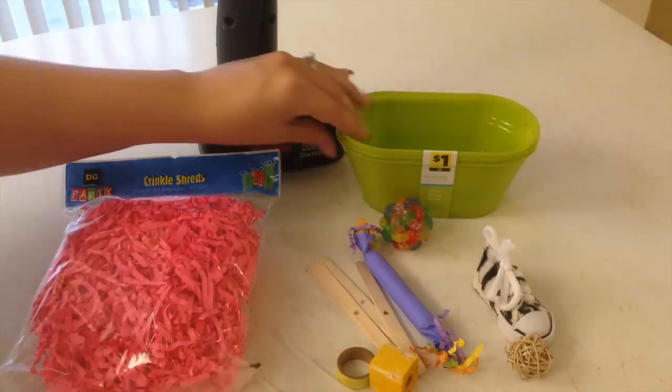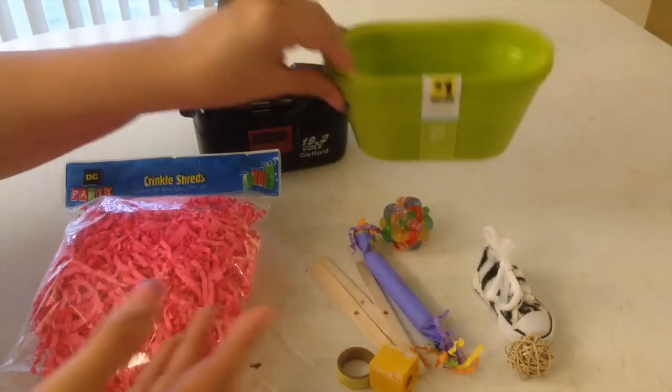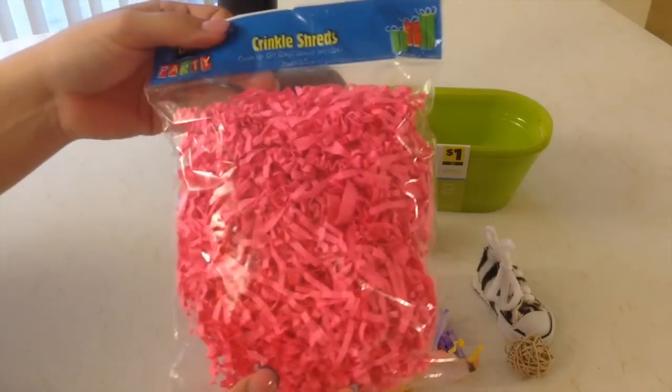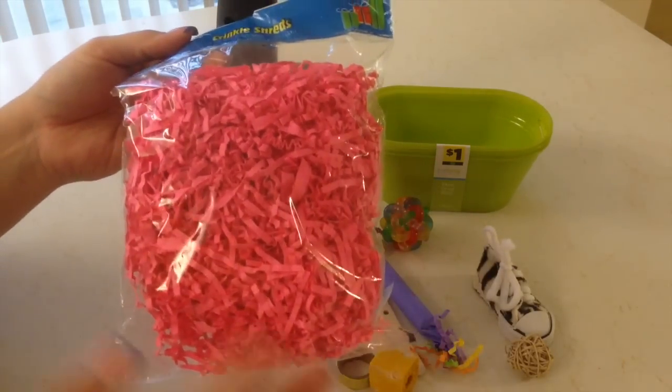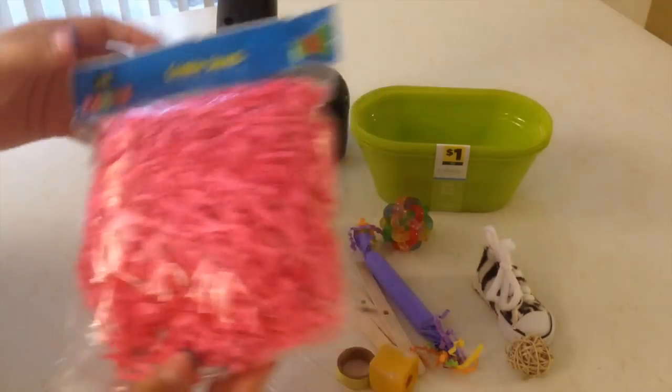What you're going to need is some kind of basket and I found three for a dollar. You're going to need shredded paper and they come in a variety of colors so just pick whichever color you prefer or your parrot prefers.